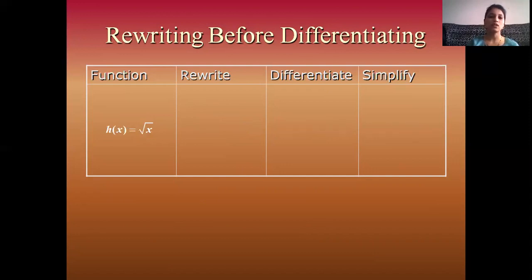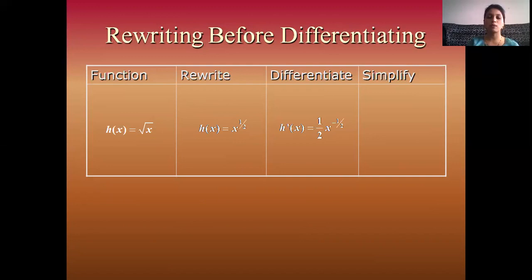Third example: h(x) = √x. Everyone knows that √x = x^(1/2). Rewrite: h(x) = x^(1/2). Apply derivative on both sides. h'(x): using the power rule, the derivative of x^(1/2) is (1/2)x^(−1/2). Since x^(−1/2) has a negative power, it shifts to the denominator, so h'(x) = 1/(2x^(1/2)).